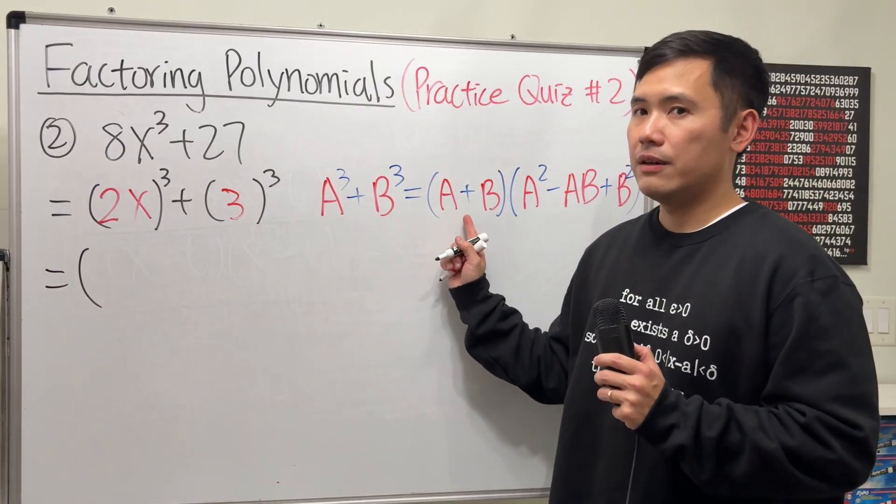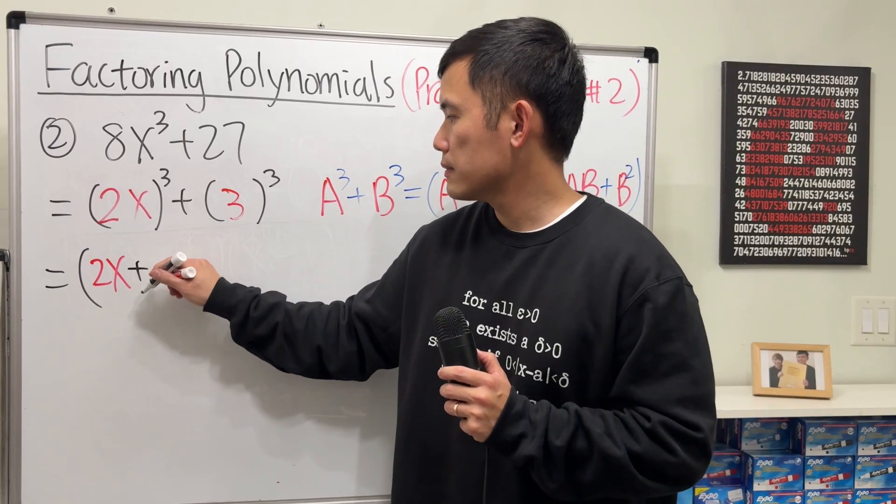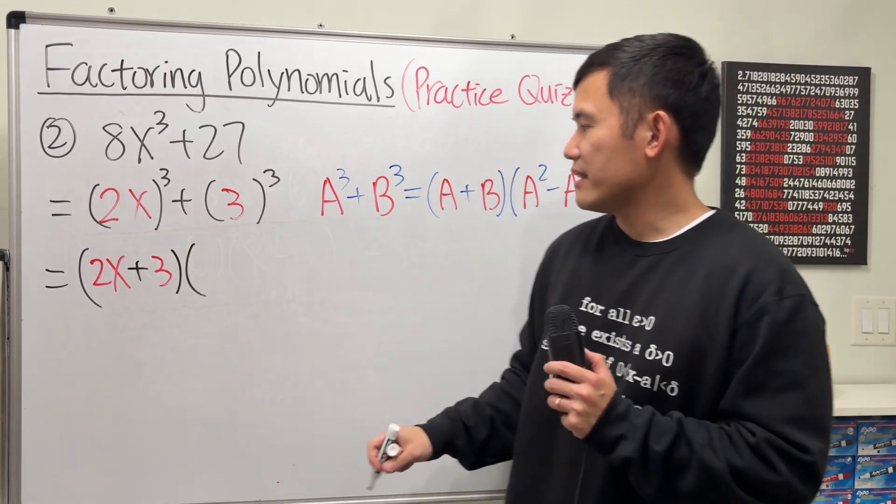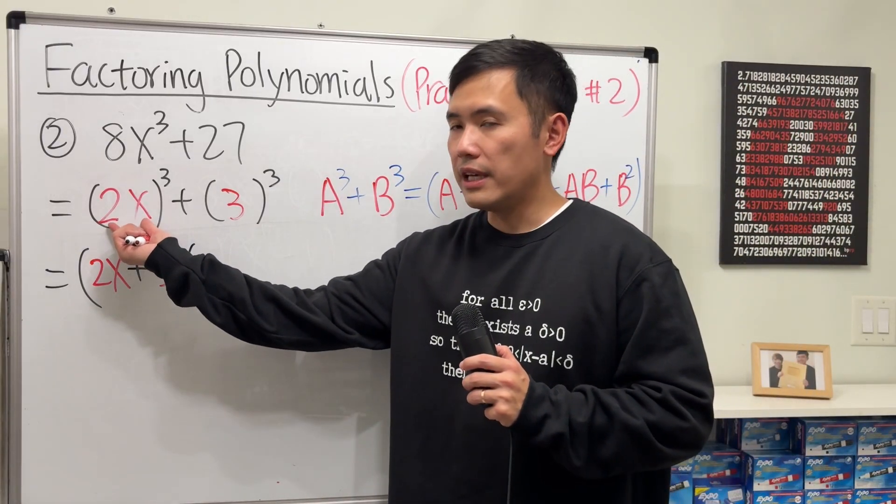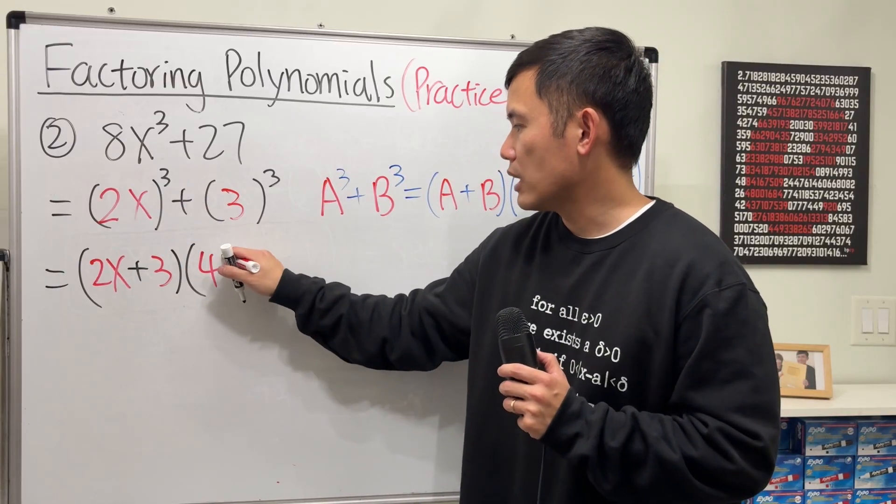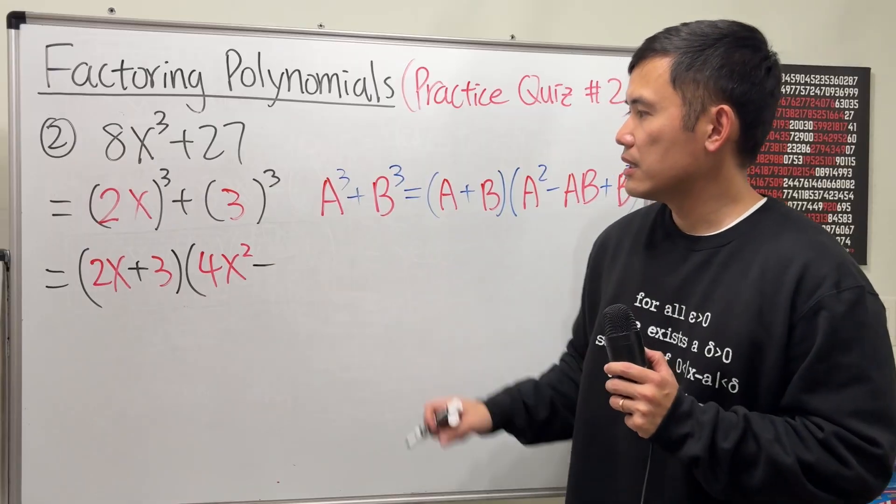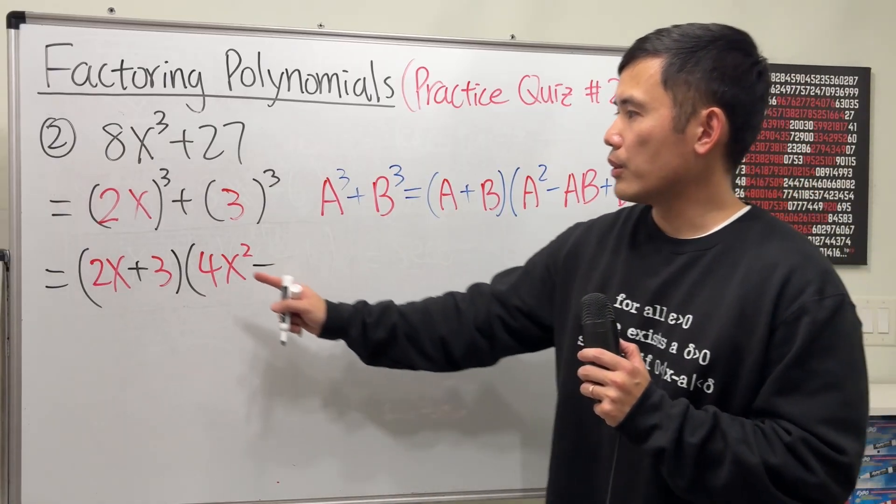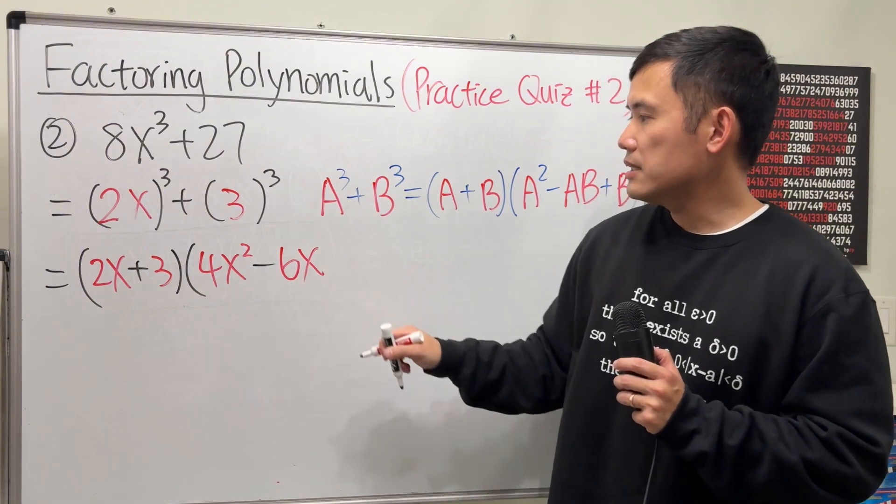First, we will have a + b, so that's 2x + 3. Then, we will have to do a². Because this is the a, square that. 2², we get 4. And then we also have the x². And then next, we have minus a times b. So that's 2x times 3, which will get 6x.